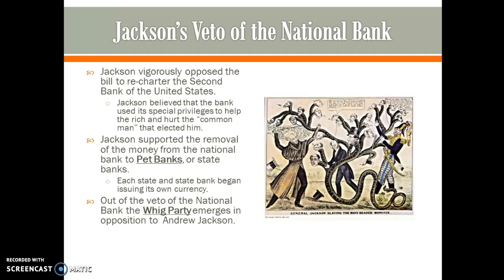Jackson vigorously opposed the bill to recharter the Second Bank of the United States. He believed the bank used its special privileges to help the rich and hurt the common man, so he wanted to get rid of the National Bank. Jackson supported removing money from the National Bank to pet banks, or state banks. Each state bank then began issuing its own currency. Out of the veto of the National Bank, the Whig Party emerged — they opposed vetoing the National Bank and therefore opposed Andrew Jackson.